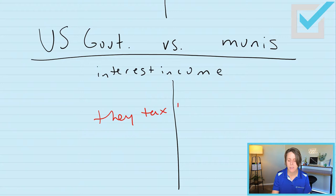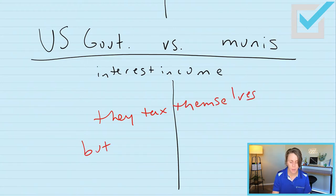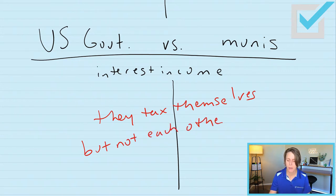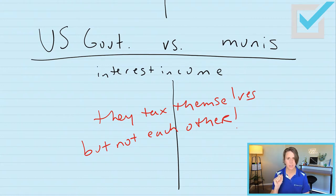The saying that will help you remember goes like this: 'They tax themselves, but not each other.' This is the rule for the test.